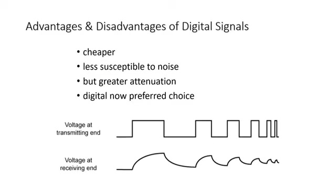The principal advantages of digital signaling are that it is generally cheaper than analog signaling and is less susceptible to noise interference. The principal disadvantage is that digital signals suffer more from attenuation than do analog signals. The figure shows voltage pulses and the received voltage some distance down a conducting medium, where pulses become rounded and smaller due to attenuation. The telecommunications industry says digital is the preferred choice, and many facilities have moved to digital transmission and digital signaling techniques.